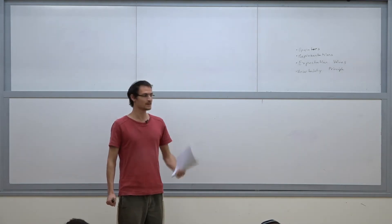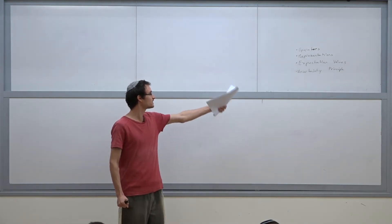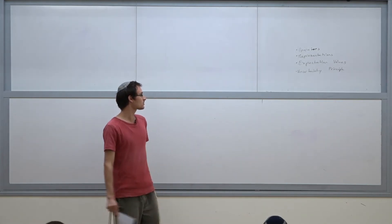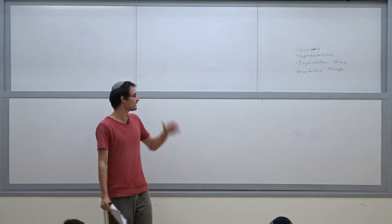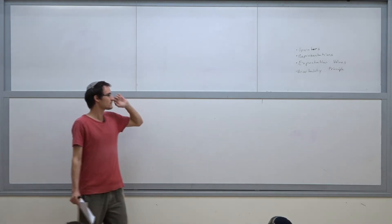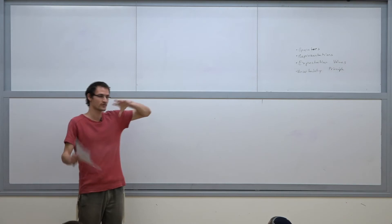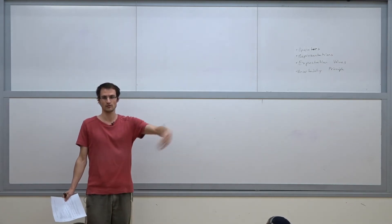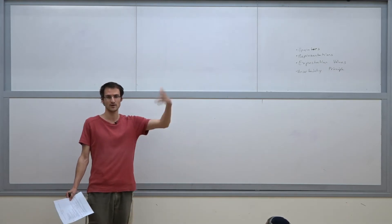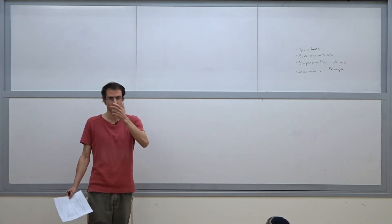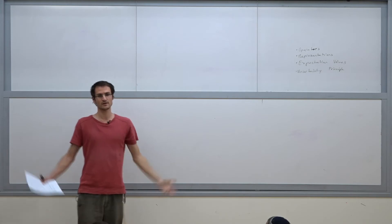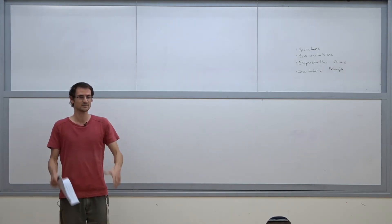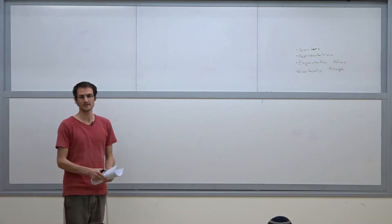For today, we're going to go over operators. We're going to talk about representations, x-space, p-space. We're going to talk about expectation values and the uncertainty principle. These are going to be the last more theoretical parts of this course. From next week on, we're going to be solving different systems, starting with the infinite potential well. Next week we'll really get into actual quantum mechanical systems, applying all the principles we've covered up till now.